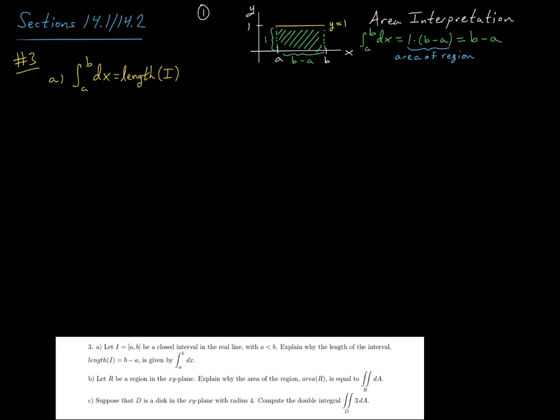Okay, and so then this picture would come to mind, and you're saying, well, I'm just going to find the area bounded by this horizontal line in the x-axis over the interval from a to b. So in other words, this integral would just be the area of this rectangle. And that is just the height, which is 1, times the width, which is b minus a.